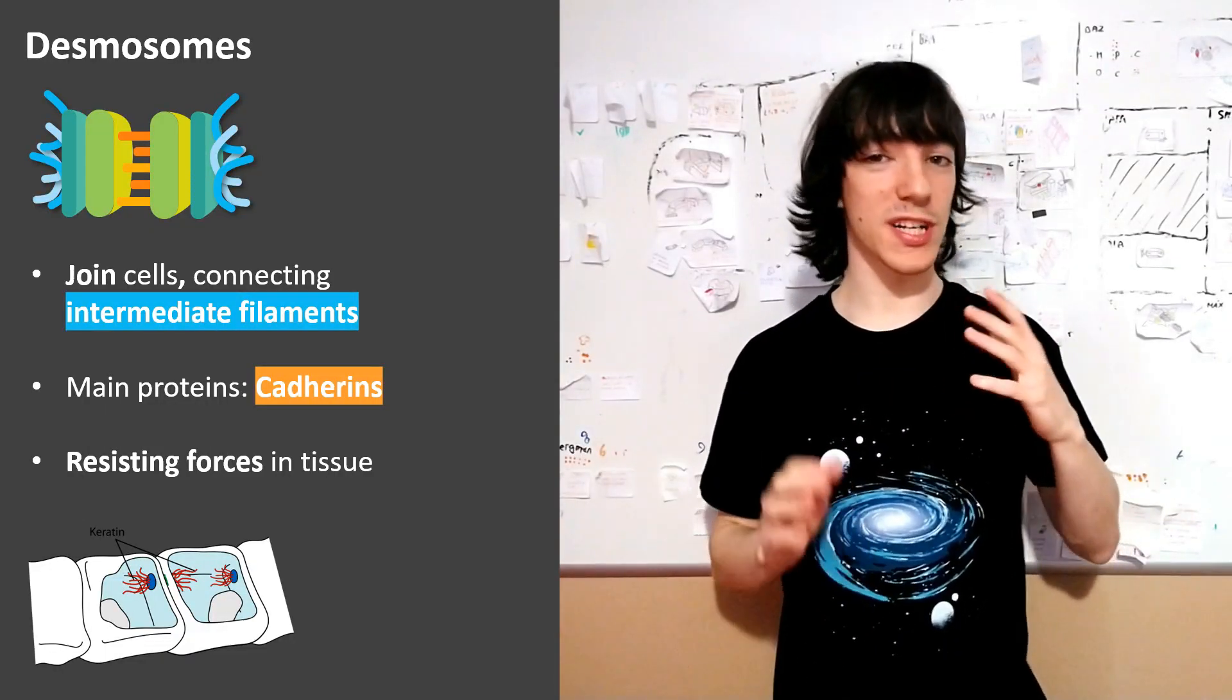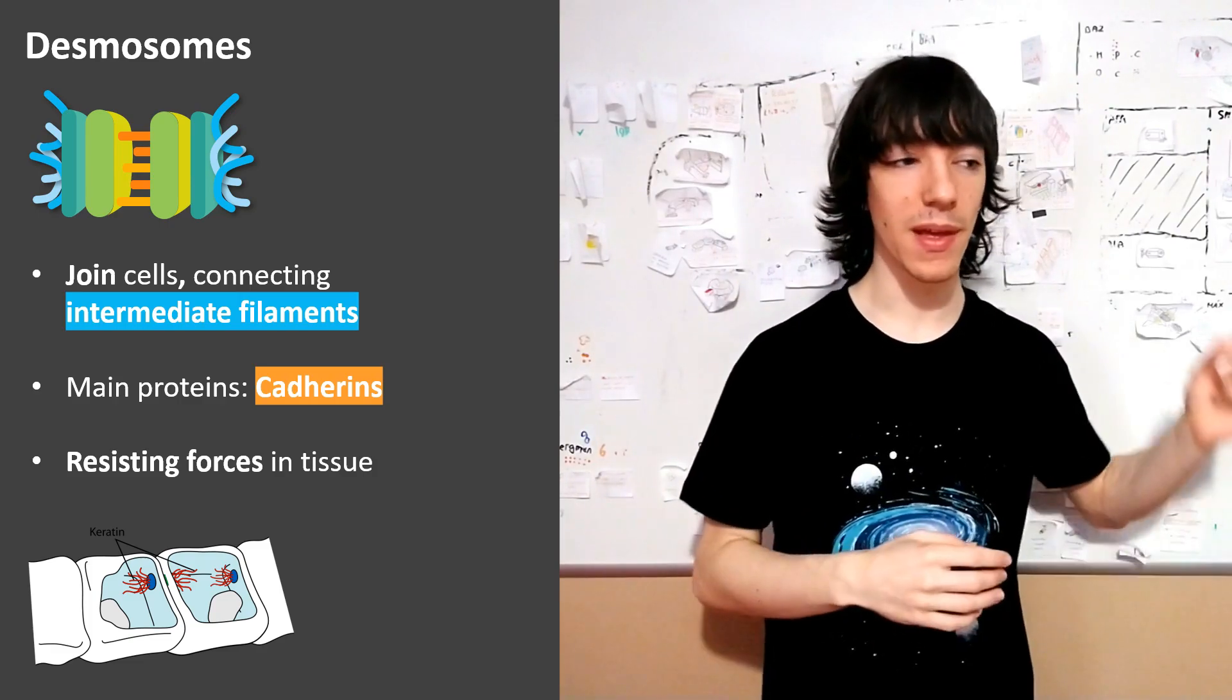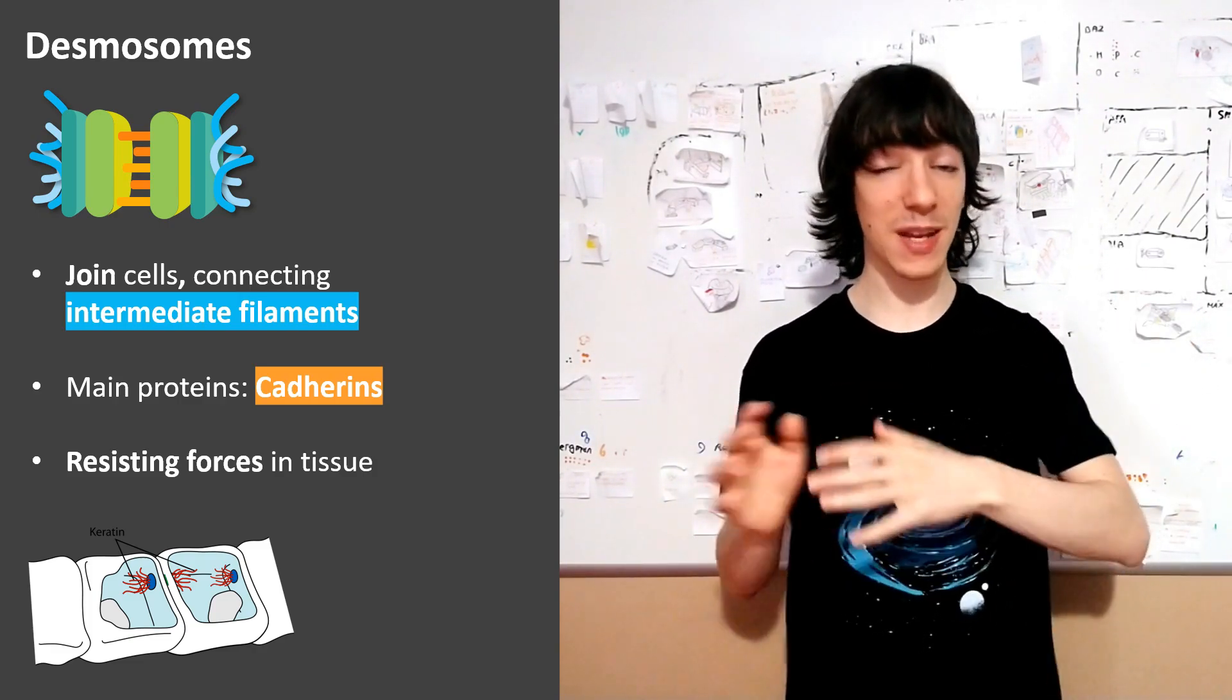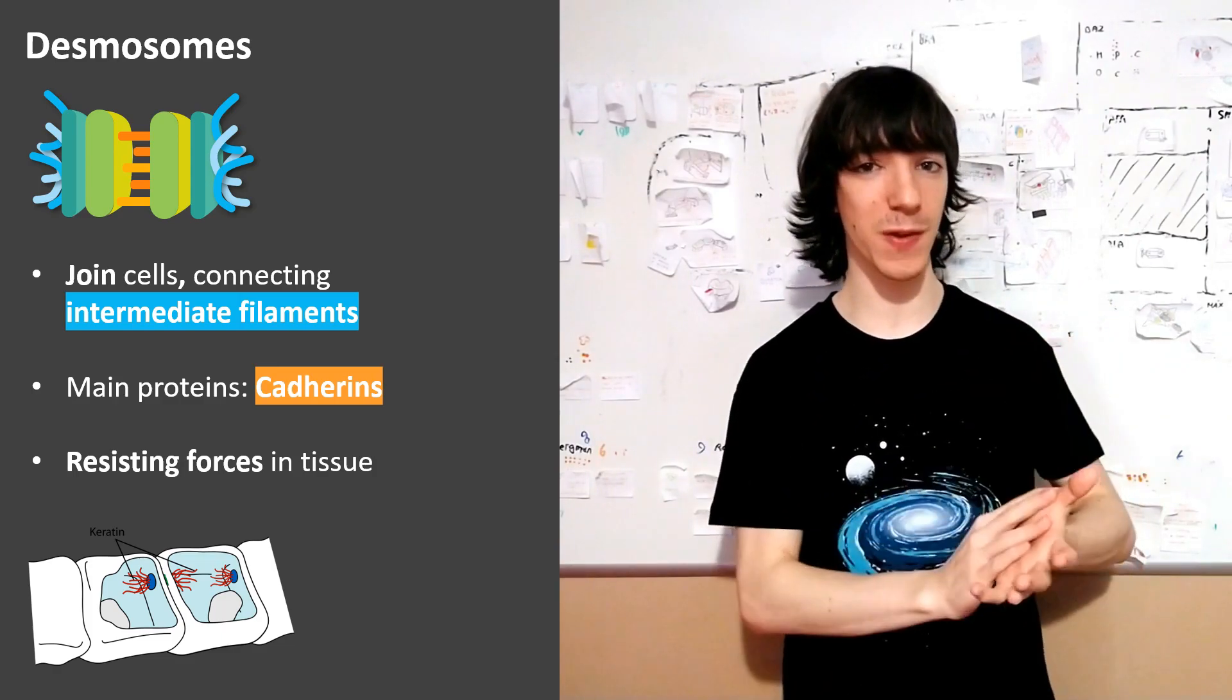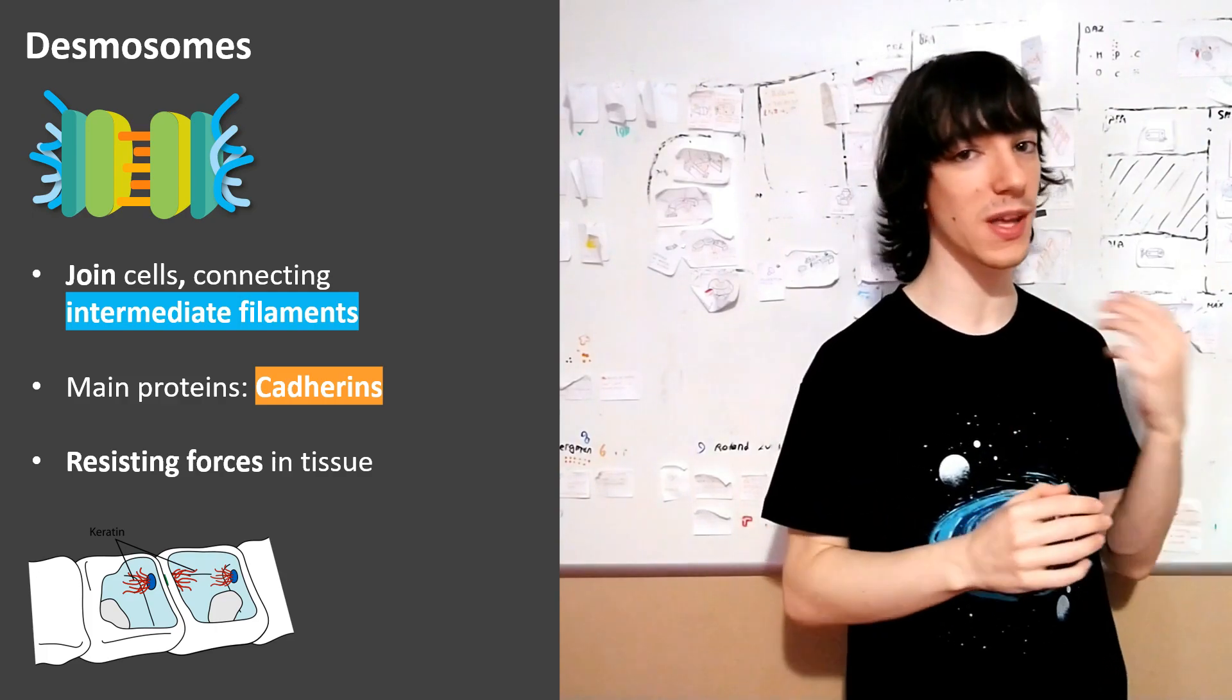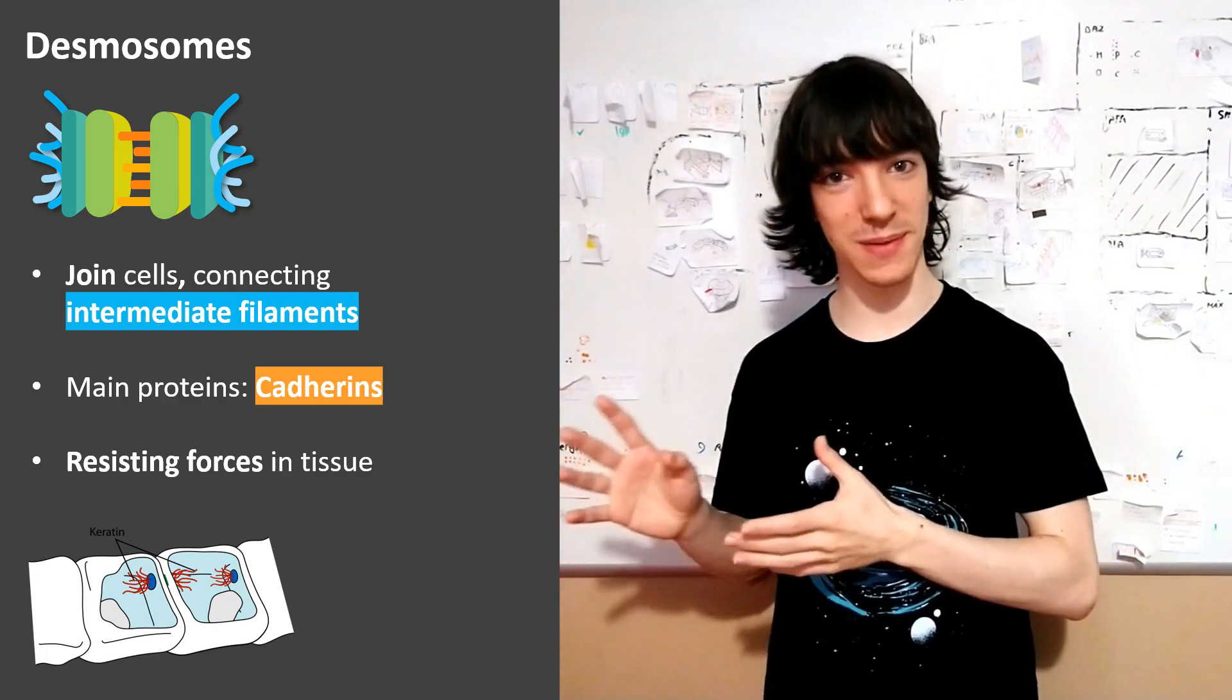By the way, if for some reason your body can't make desmosomes or they are destroyed by the immune system, you're in serious trouble because your skin would fall off. And that's something that happens. The disease is called pemphigus, and if you're studying this in the context of medicine, you're probably going to hear about it more than maybe if you are just doing the cell biology part.